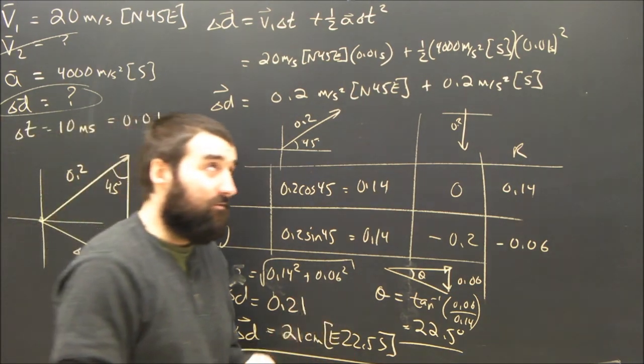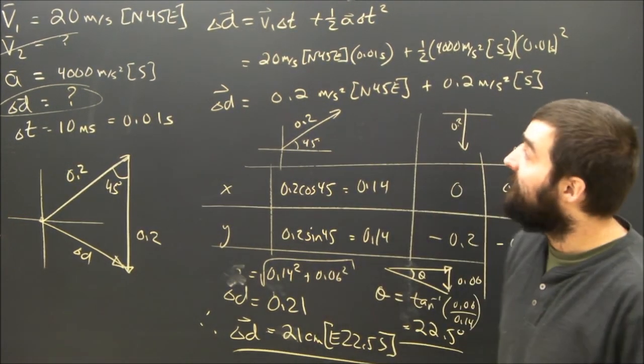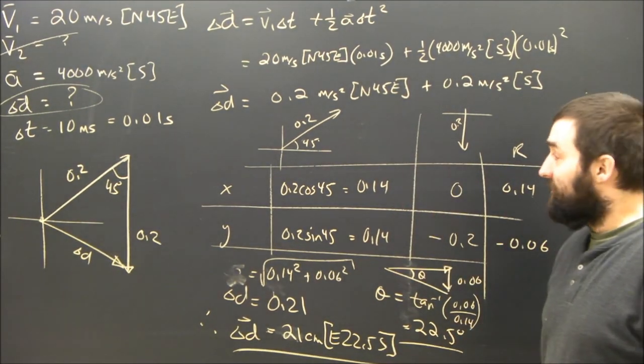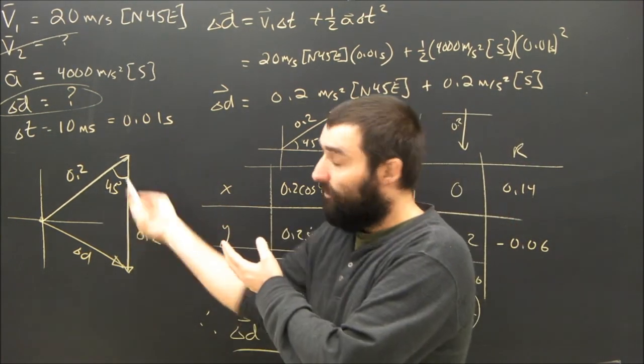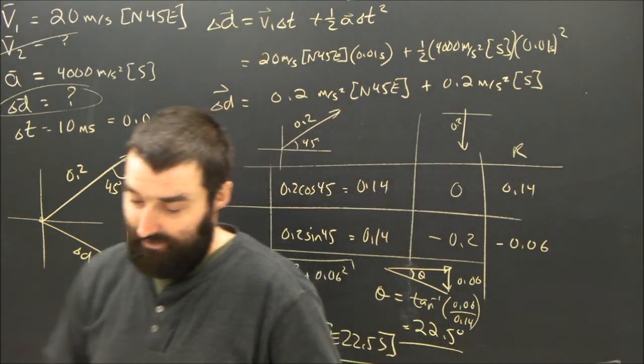Should I round that to 22 because I really technically only have two sig figs, I guess? 45 degrees? Yeah, maybe I should. Who knows? I don't really care right now. I could have used the cosine law or the sine law and I would have got the exact same answer.